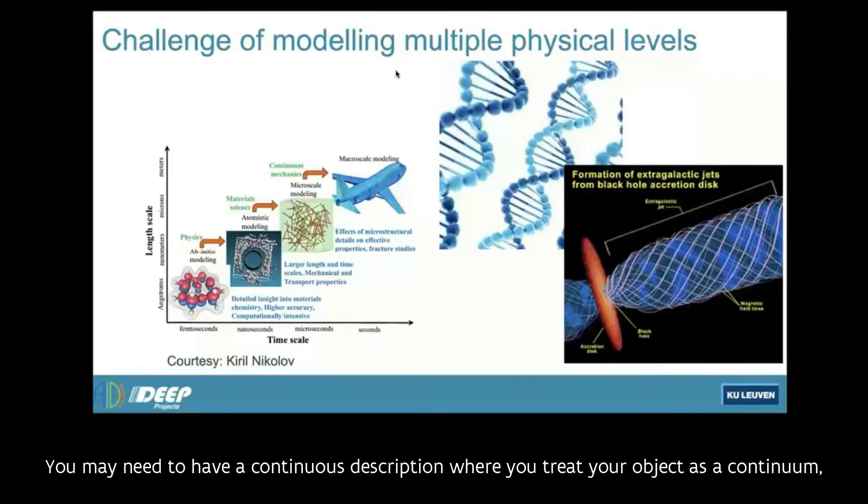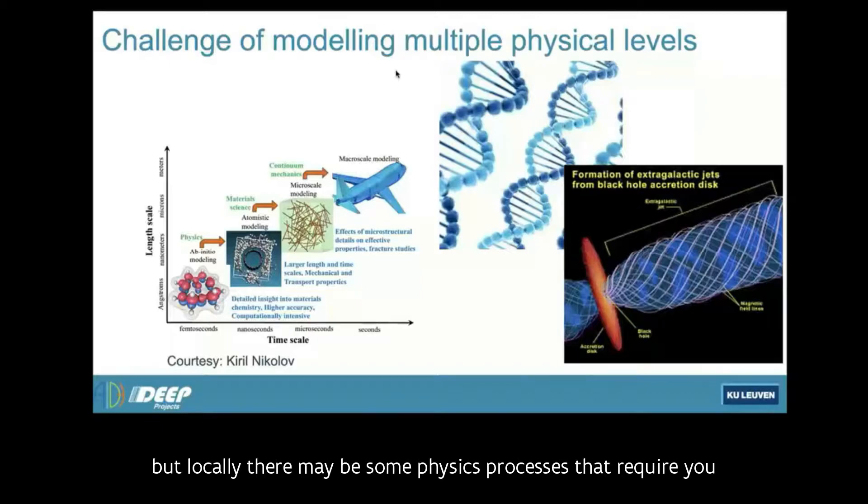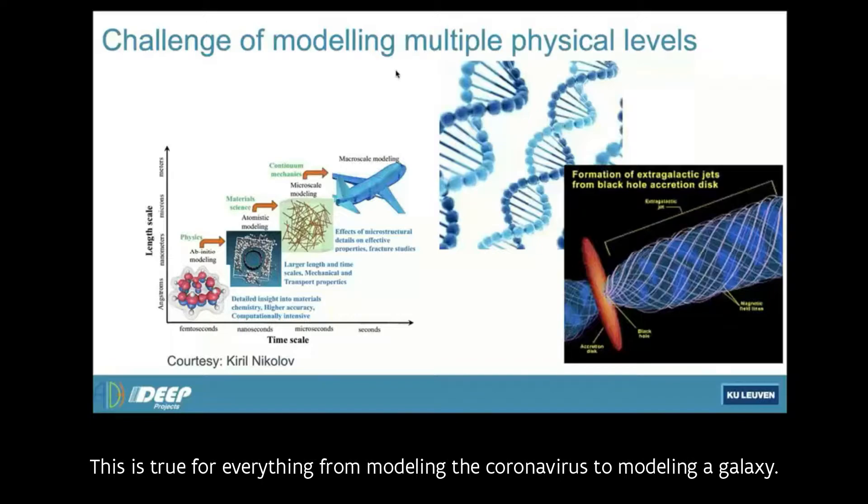You may need to have a continuous description where you treat your object as a continuum. But locally, there may be some physics processes that require you to remember that there are actually particles there: atoms, electrons, ions, protons, neutrons and so forth. This is true for everything from modeling the coronavirus to modeling a galaxy.